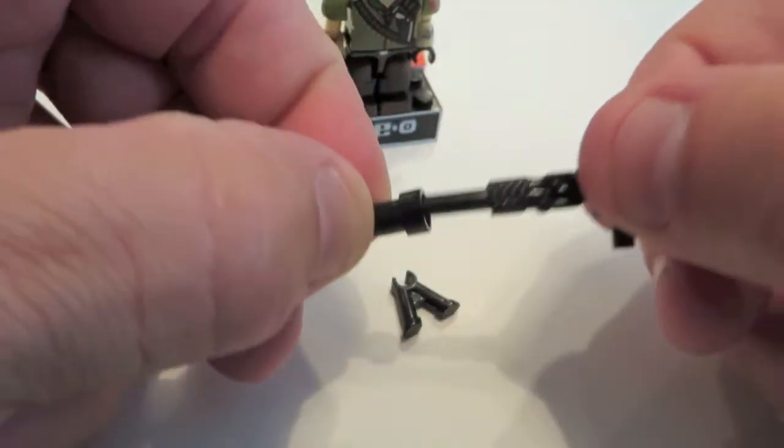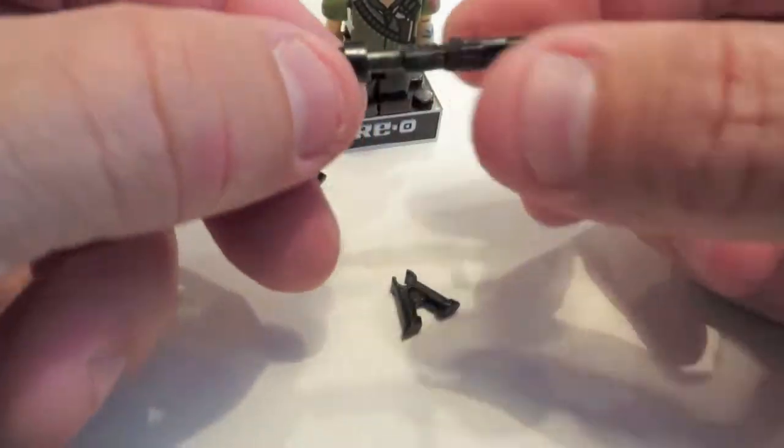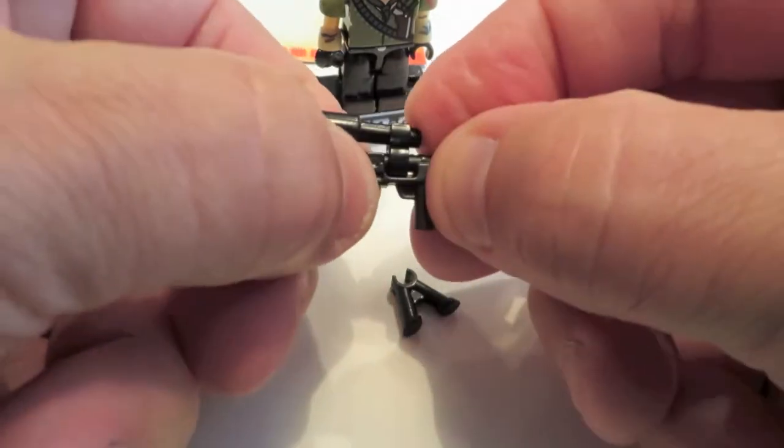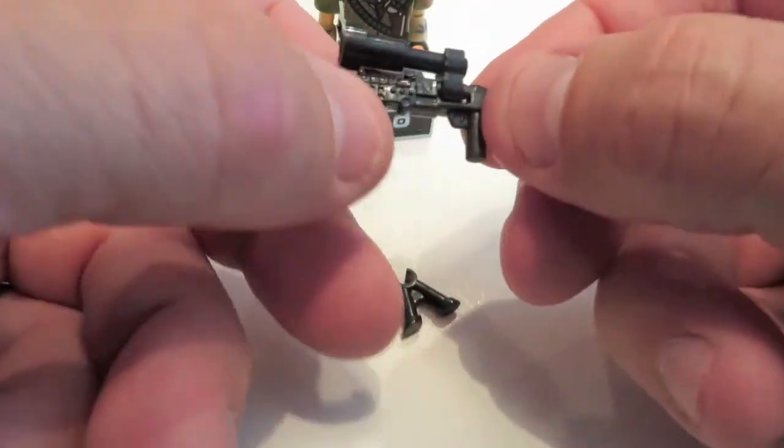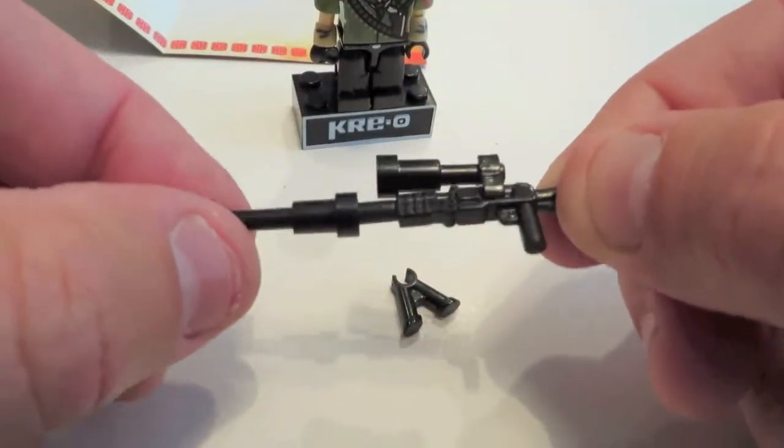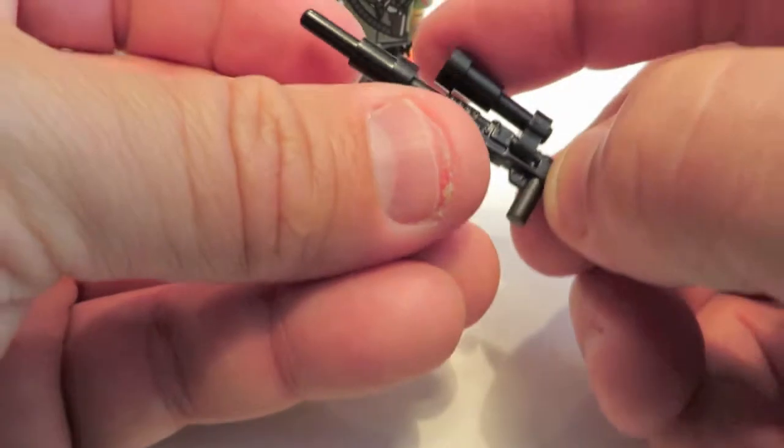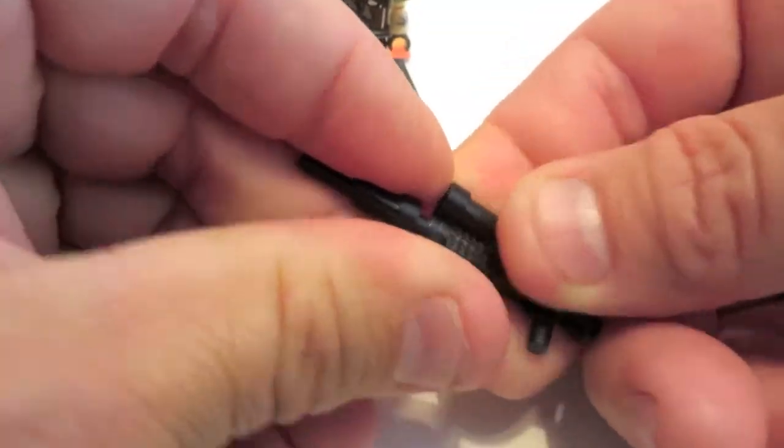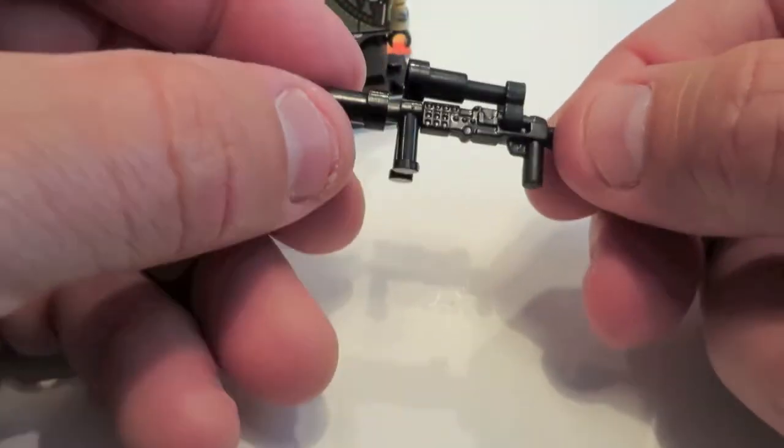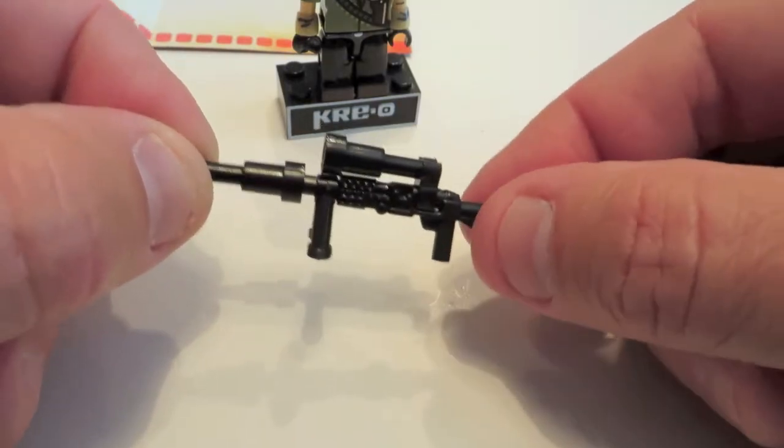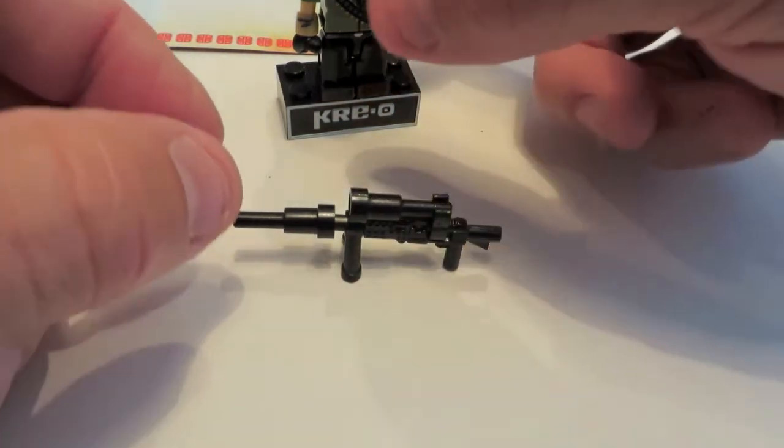And I'm gonna have to consult the directions here to see how we assemble his weapon. Okay, so it appears that his weapon, okay, that's pretty cool. This is built to look like a sniper rifle. So as you can see all those little pieces.